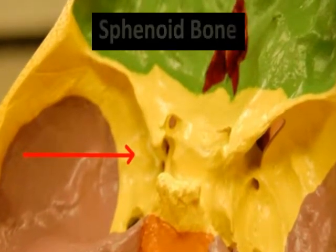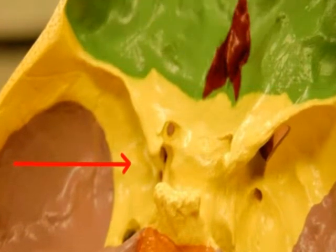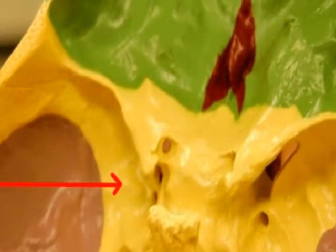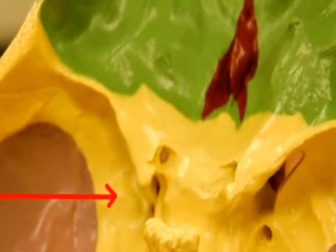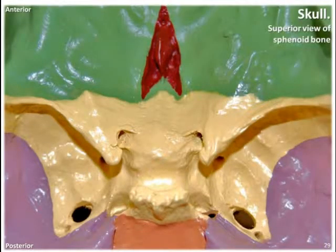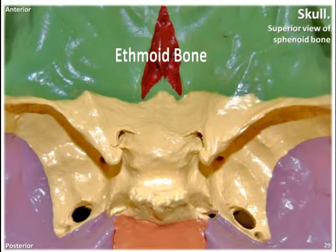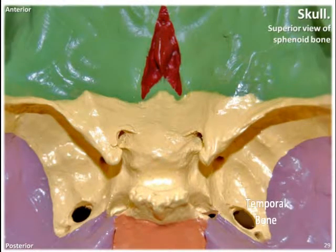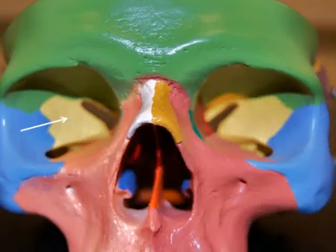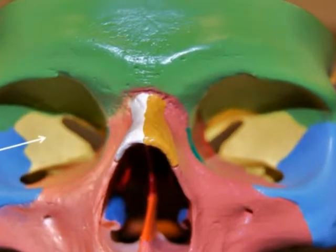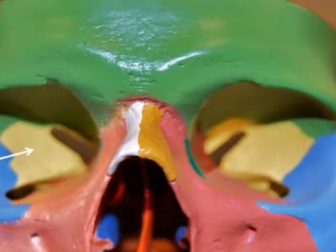Our next cranial bone is the sphenoid bone, located in the middle part of the base of the skull. It's firmly embedded within the skull and is considered a major keystone bone of the cranial floor because it joins together with all of the other cranial bones. It joins on its anterior side with the frontal and ethmoid bones, laterally with the temporal bones, and on its posterior side with the occipital bone. It's located just posterior to the nasal cavity and also forms part of the floor, side walls, and rear walls of the orbit of the eye.